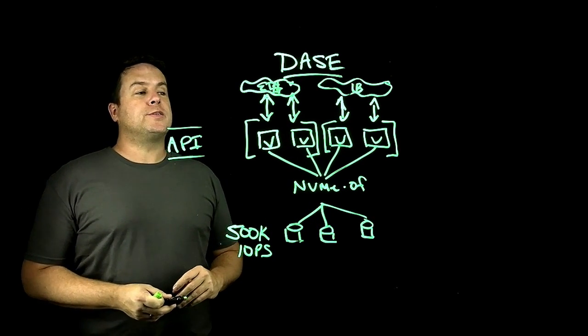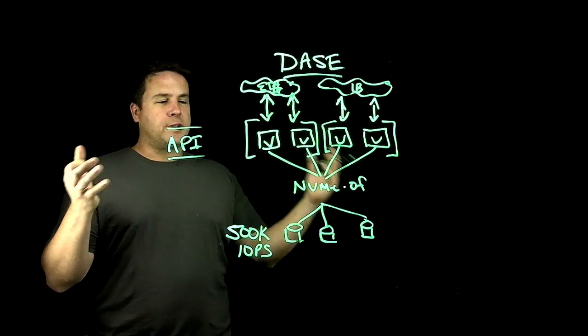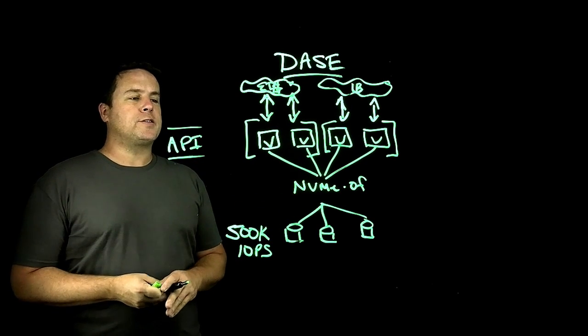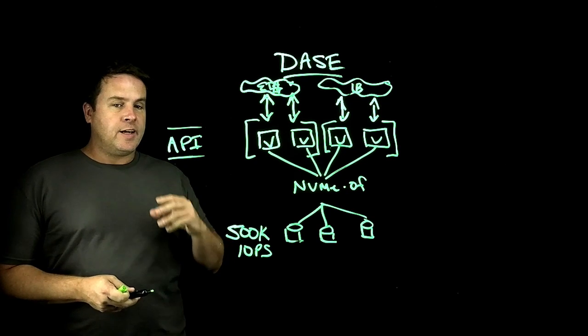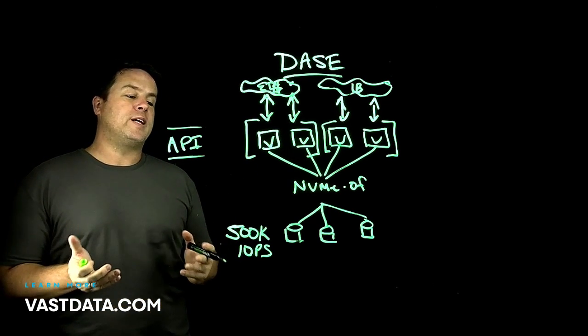It becomes possible to do that with this pooling concept in a way where you don't need special network gateways, or you don't need additional proxies to manage data across these different clusters. Every cluster can get precisely the number of CPUs that it needs. And each thinks that it has its own dedicated storage environment because it has its own dedicated controllers.